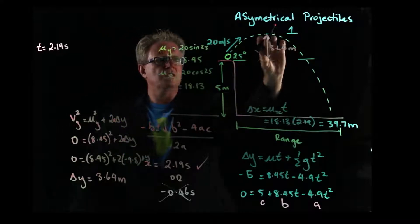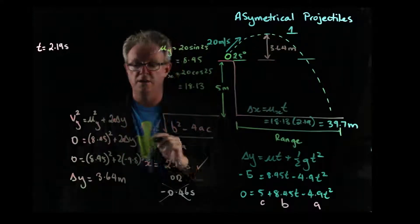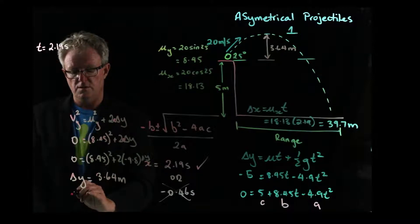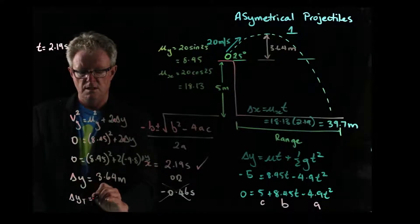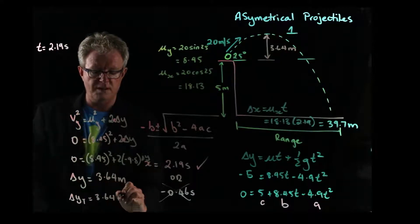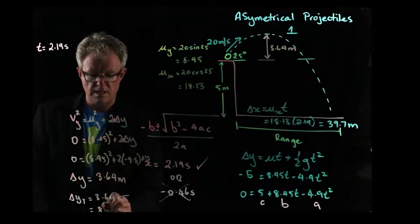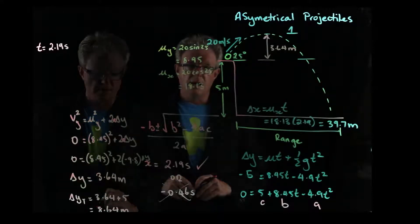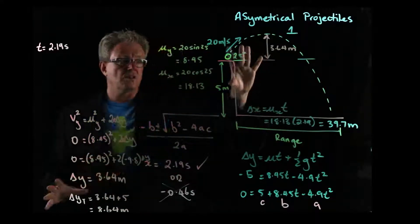So that is only for that height, though. We now need to add this height, which is 5. So the total height, or total change in y is 3.64 plus the 5 is 8.64 meters. So that's how you do the height.